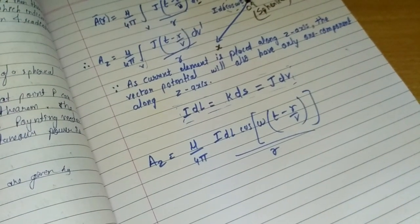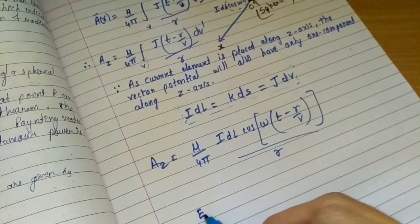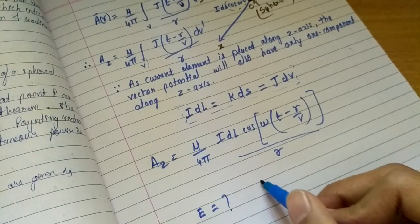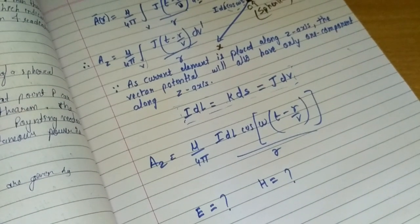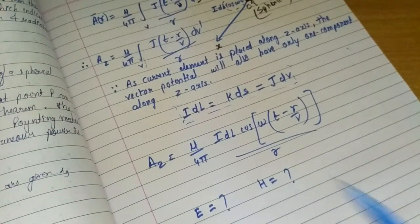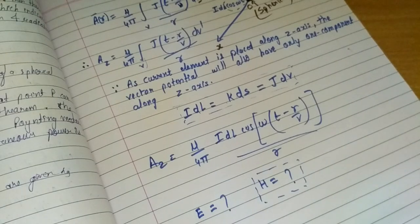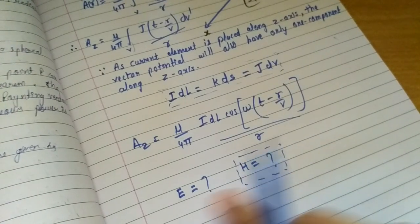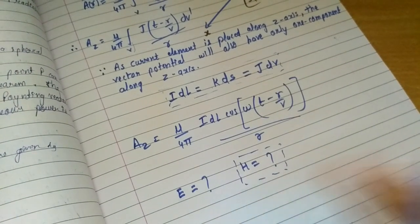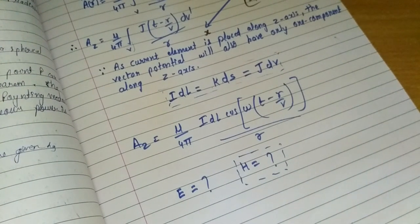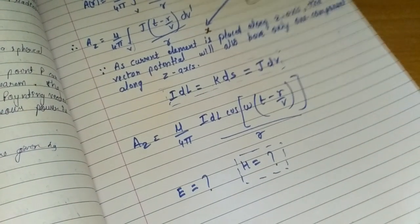Our aim is to find the electric field E and magnetic field H. In this video, we will find the magnetic field H first, and then from that we will find the electric field E by using Maxwell's relation between E and H.